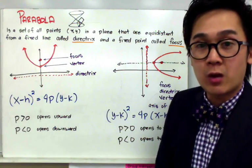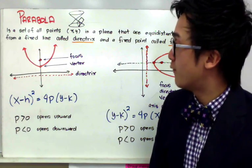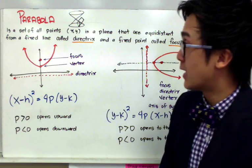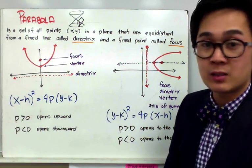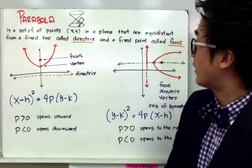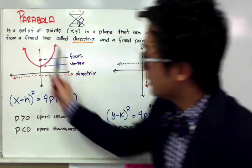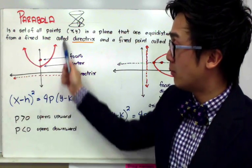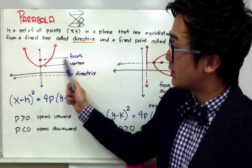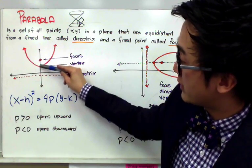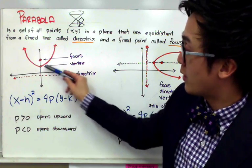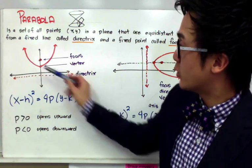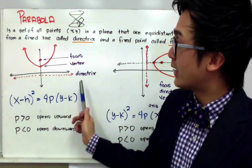The first thing we need to know about each conic section is the special parts for each one. For the parabola, it's defined as a set of all points (x, y) in a plane that are equidistant from a fixed line called the directrix and a fixed point called the focus. The focus is the point inside the parabola, and the vertex is basically your midpoint between the focus and the directrix.